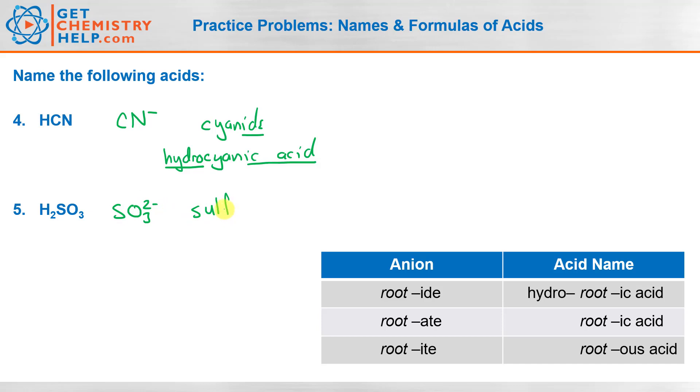Sulfite. Well, ite tells us to put ous on the end. Now, the only difference is whenever you have an anion that's based on sulfur or phosphorus, we don't just say sulfous acid. We do put the ur back in sulfur and the or back in phosphorus. So whenever it's a sulfur or a phosphorus anion, the root isn't just sulf. We do put ur back in there. So in this case, it's going to be sulfurous acid.